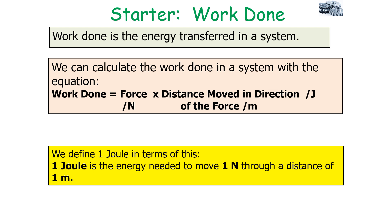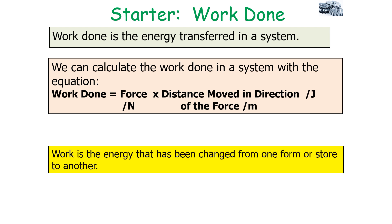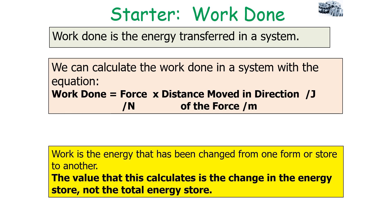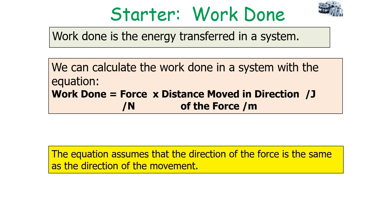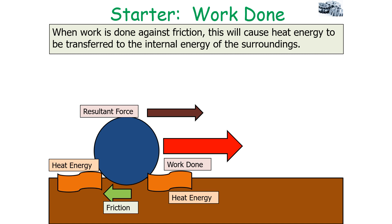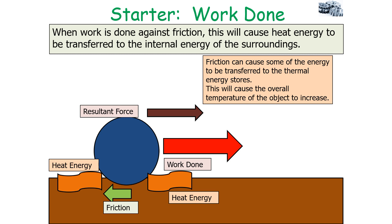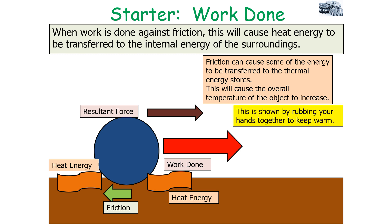Work is the energy changed from one form or store to another, and this does not have to be the total energy of the object — the equation calculates the change in the energy store, not the total energy store. The equation assumes the direction of the force is the same as the direction of movement, and that the size of the force is a fixed or average value. When work is done against friction, heat energy is transferred to the internal energy of the surroundings, causing the overall temperature of the object to increase — as shown by rubbing your hands together to keep warm.